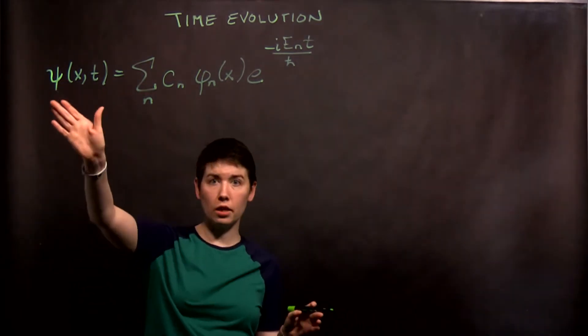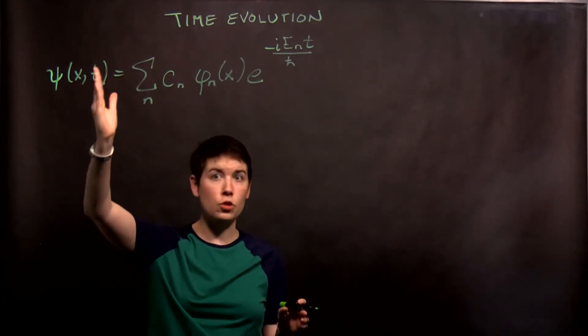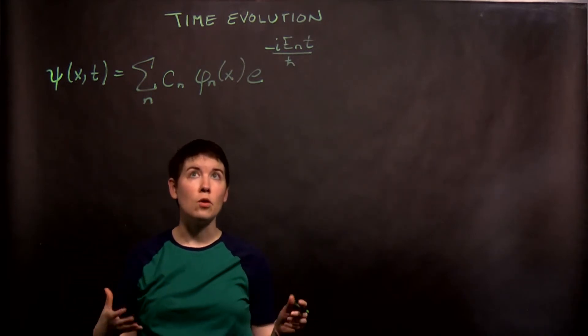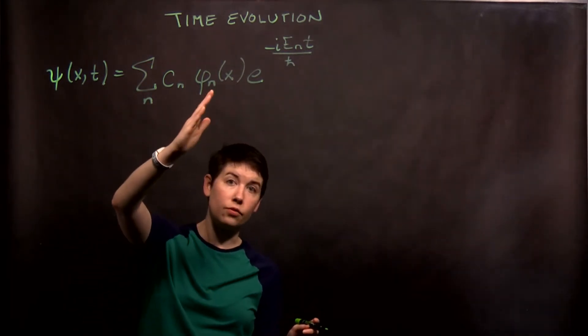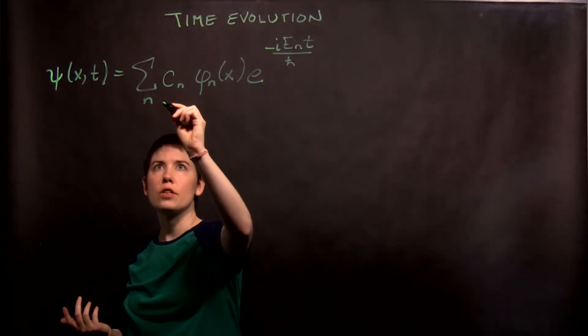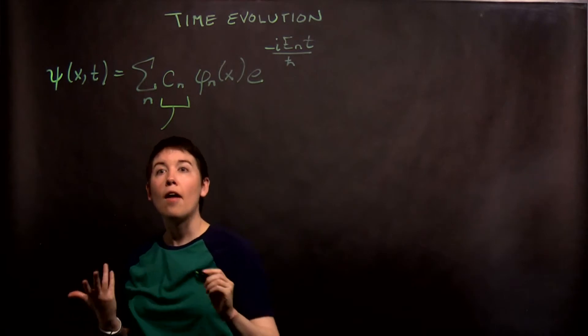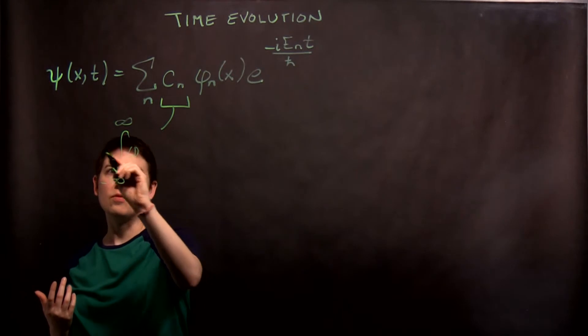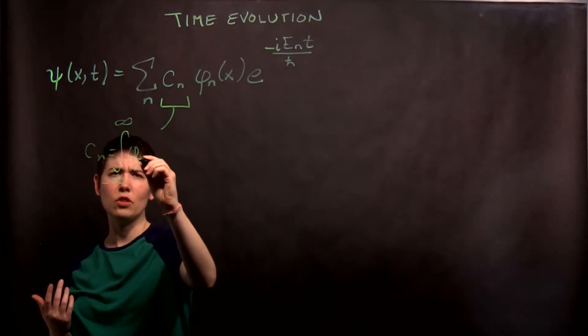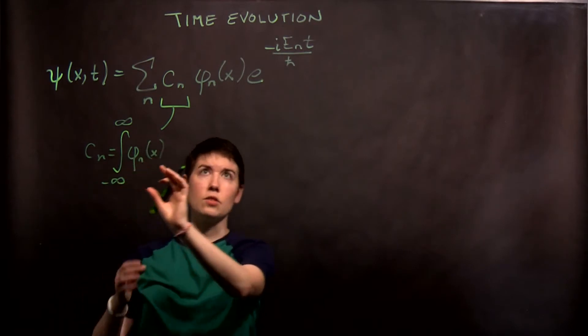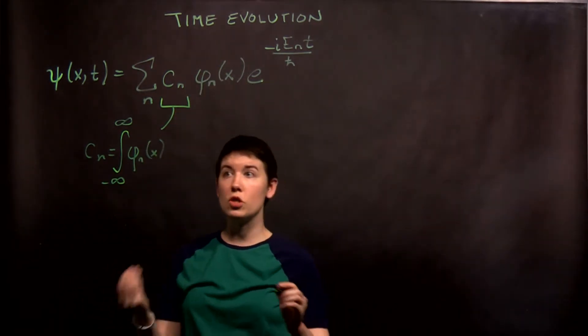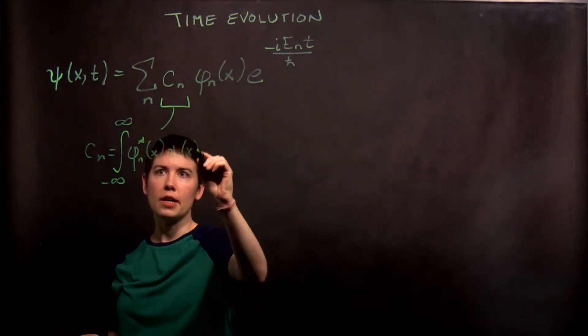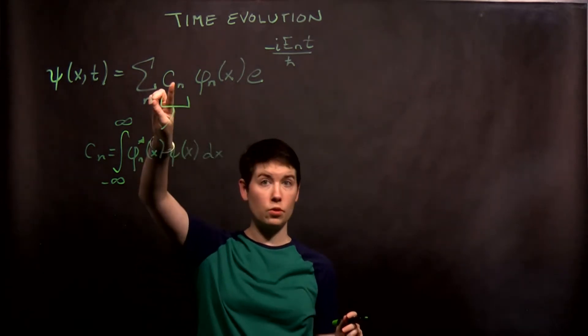So how do we get a general wave function in the spatial and time representation? So you see this summation, right? We're summing over c sub n. Why? Each of these n's is indicating a different energy eigenstate. So the previous sets of videos says, how do we find that? And that's where we did that integration from negative infinity to infinity.